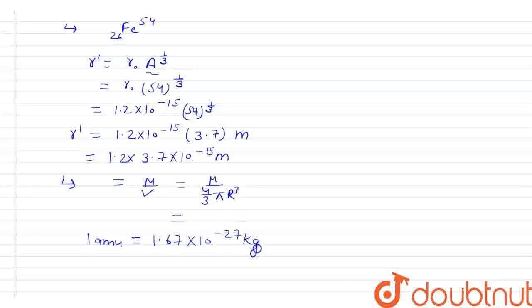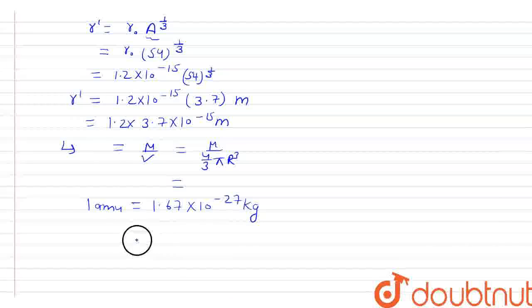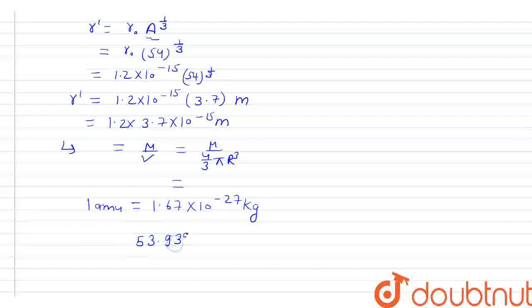Aur apne paas 53.9396 amu given hai. So the mass is 53.9396 × 1.67 × 10^(-27) kg. This mass divided by 4/3 π times (1.2 × 3.7 × 10^(-15))³ gives us kg per meter cube.